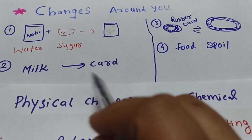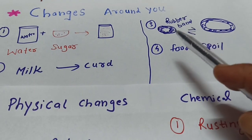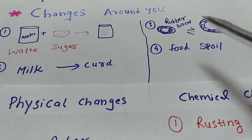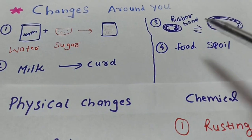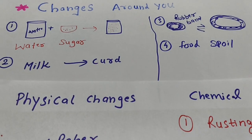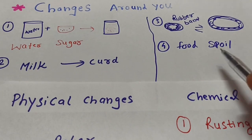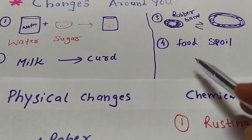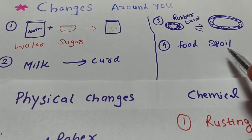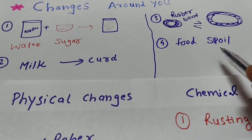Milk and curd taste different. Then if you have a rubber band, what do you do? You can stretch it and fold it, and then it comes back to the same shape after some time.